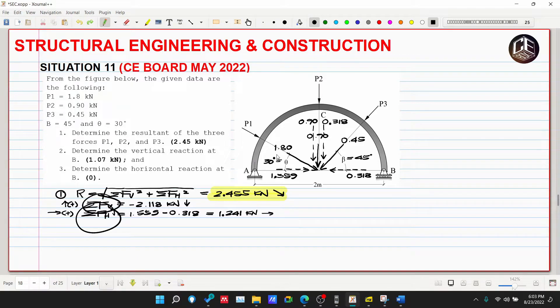Number 2: determine the vertical reaction at B. Ano ba ang B natin? This is a roller. Since ang ating roller is merong horizontal surface, therefore ang kanyang reaction is vertical which is perpendicular to horizontal surface or B.